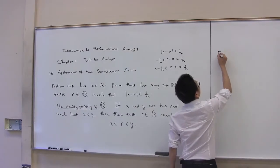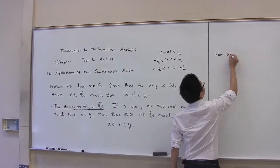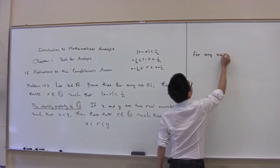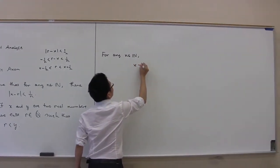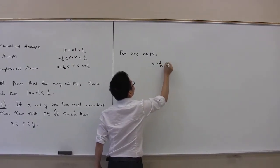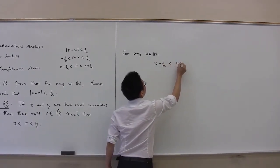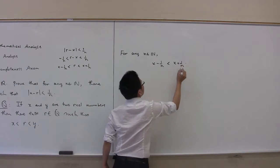For any n in N, we see that x minus 1 over n is strictly less than x plus 1 over n.